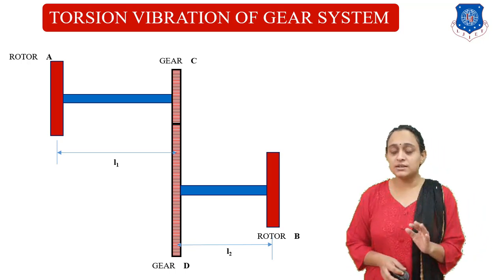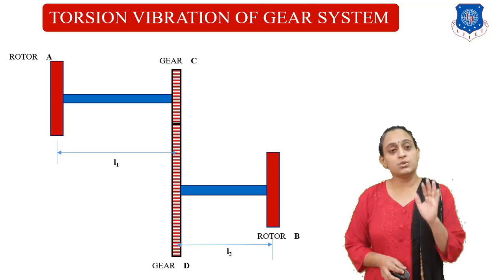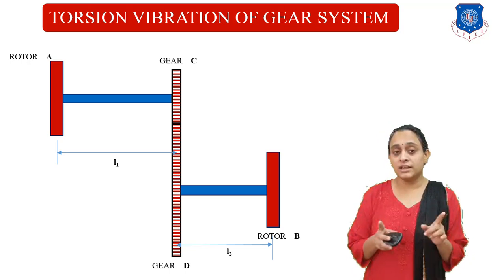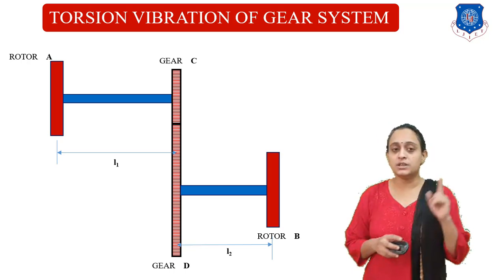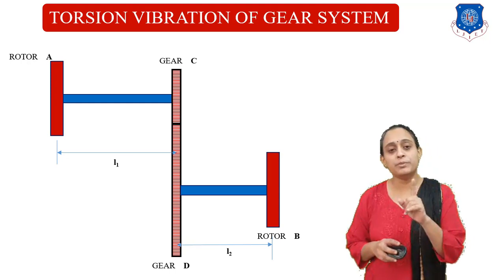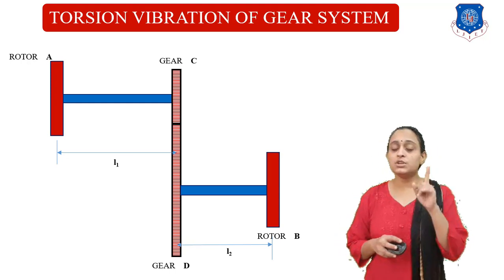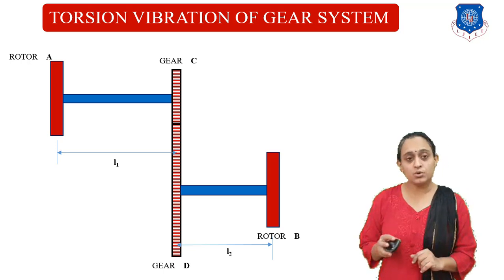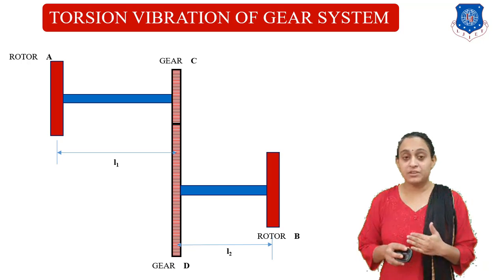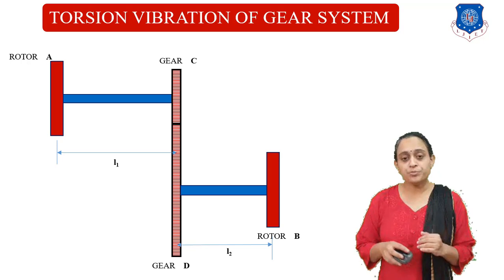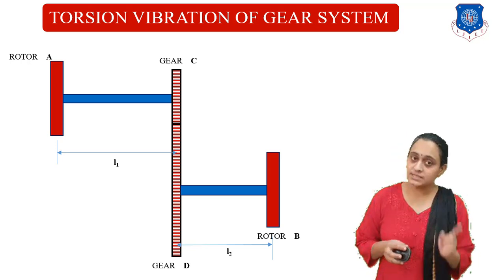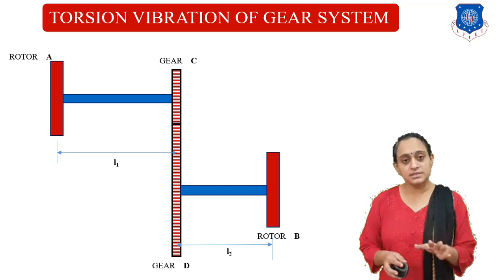If we consider the angular velocity of rotor A, which is omega A, and angular velocity of gear C — because they are both connected with the same shaft — we have omega A equal to omega C. Rotor B will rotate at a different speed because there is a gear between A and B, so rotor B and gear D rotate at angular velocity omega B.